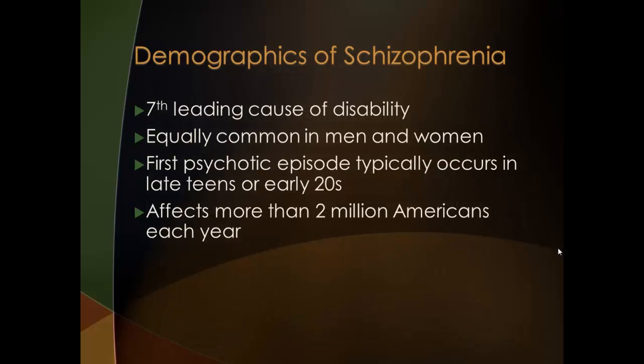A bit of the demographics on this illness gives us some perspective of how it impacts public health. Schizophrenia is the seventh leading cause of disability. It affects women and men equally. The typical onset occurs in the late teens or early twenties. It is usually an acute psychotic episode that causes the client to seek treatment. This disease affects more than two million Americans each year.